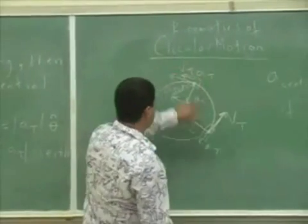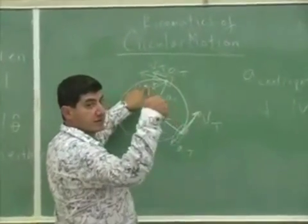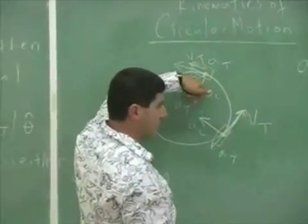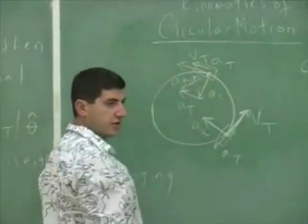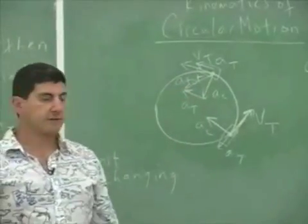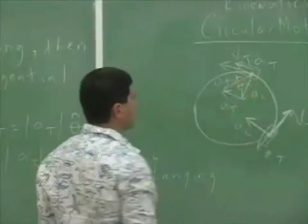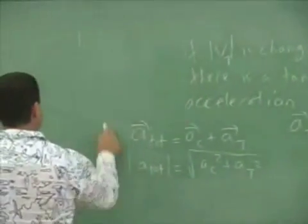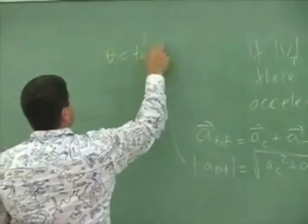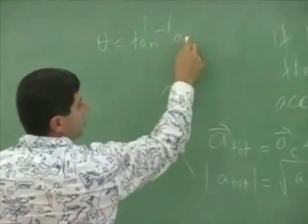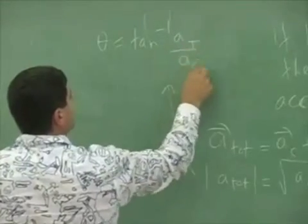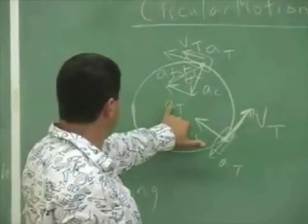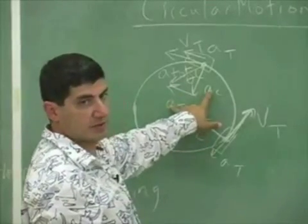The a_total vector tells you the total forces on the car as it goes around the circle. If the car is accelerating, those forces come from the engine and friction on the tires. The angle of the total acceleration measured with respect to the centripetal acceleration is theta = tan⁻¹(a_tangential / a_centripetal) — the opposite over adjacent.